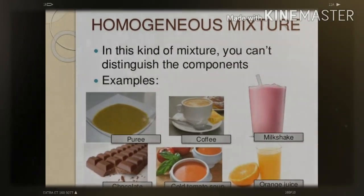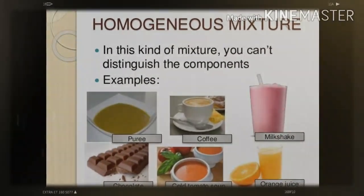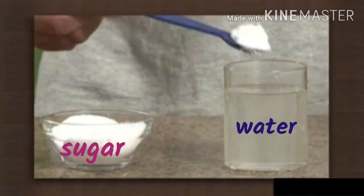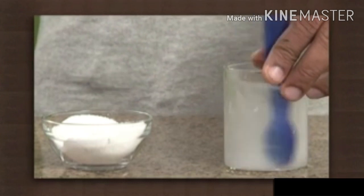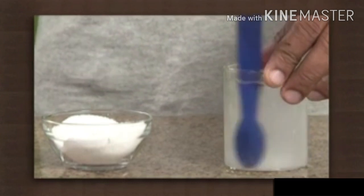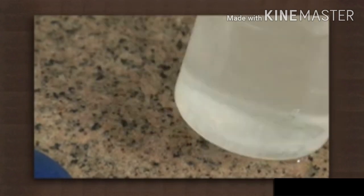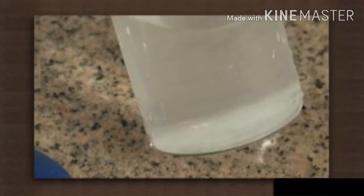Now, homogeneous mixtures. In a mixture of sugar and water, we cannot see the particles of sugar with our naked eyes. The particles of sugar are uniformly distributed in the solution.